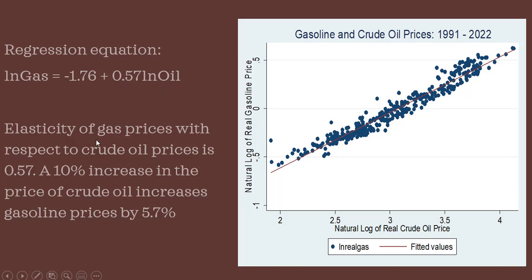That 0.57 is the elasticity of gas prices with respect to crude oil prices. The way we can interpret that is: a 10% increase in the price of crude oil increases gasoline prices by 5.7%.